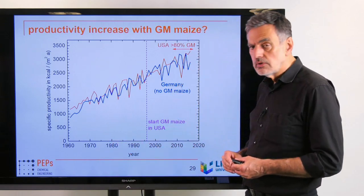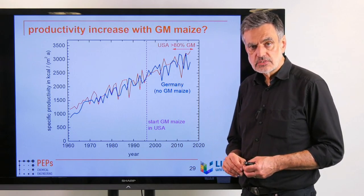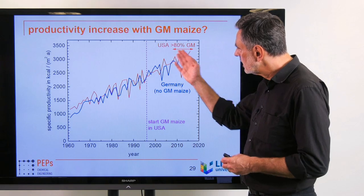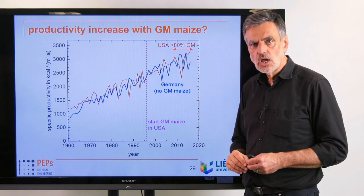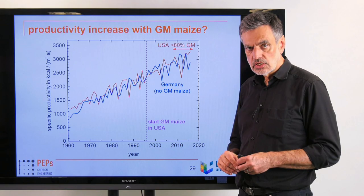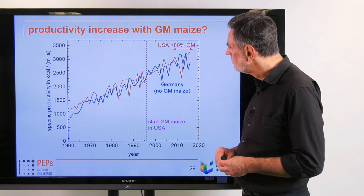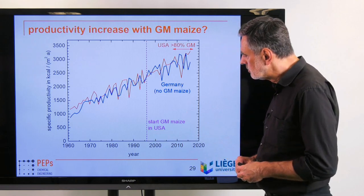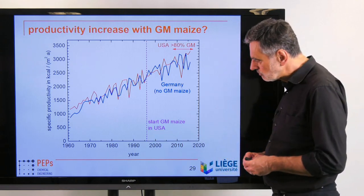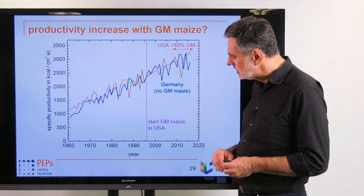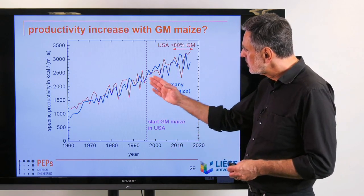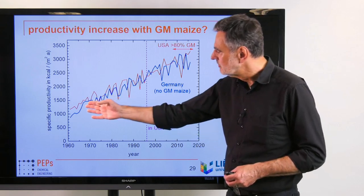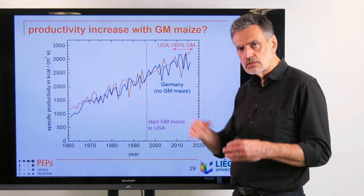The land area is more or less given — we are fighting for it, there is a competition for that. The only thing we can possibly discuss a little bit is the production per area. If you believe the companies selling genetically modified seeds, they tell you productivity will be significantly enhanced and the hunger problem will be solved. Let's look at the data.